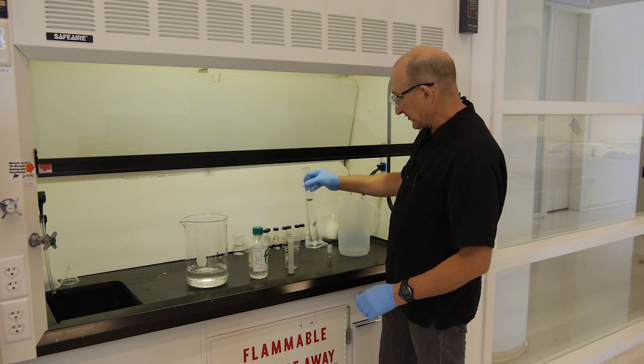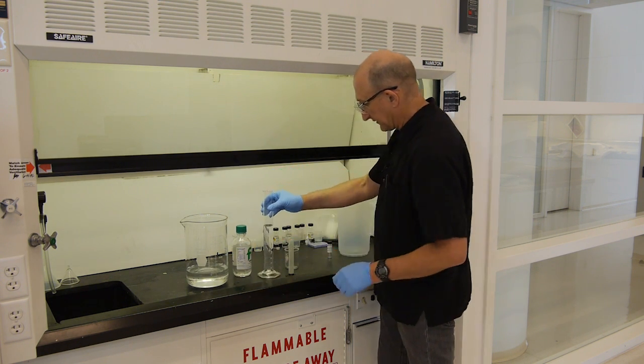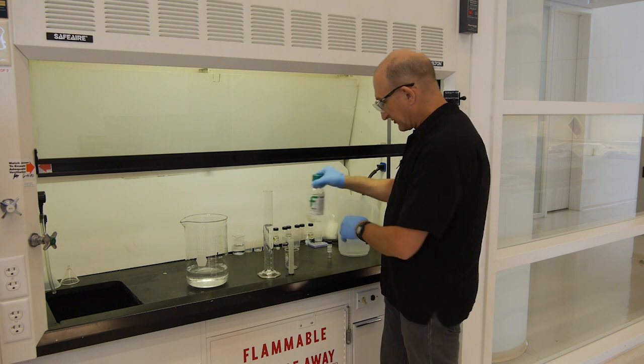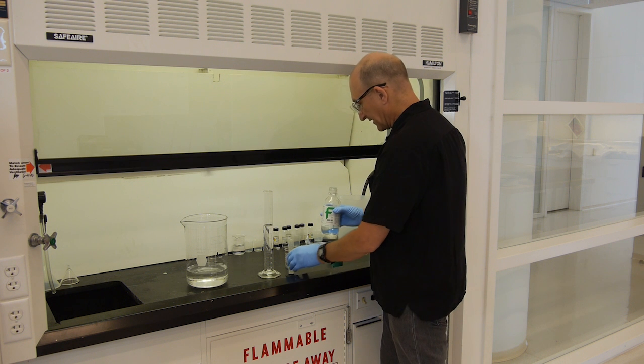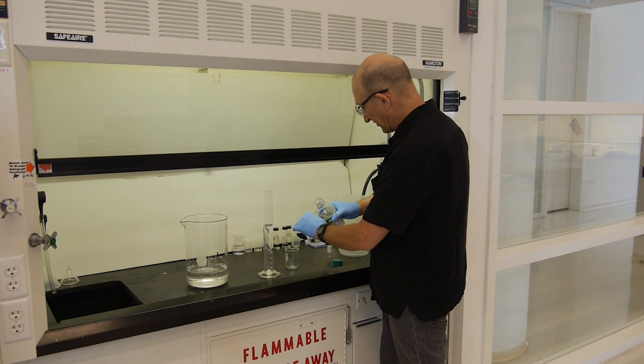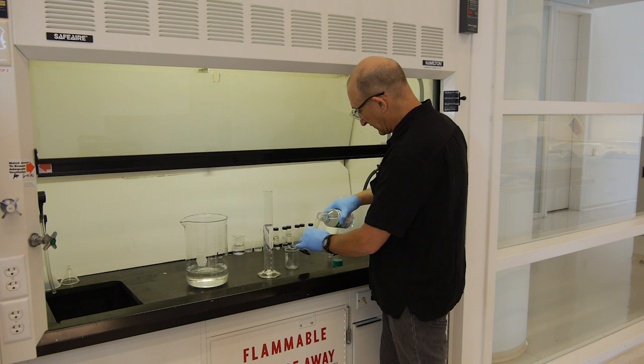So here we have 180 milliliters of deionized distilled water in our graduate. And we'll take 20 milliliters of the ammonium hydroxide. This is the concentrated ammonium hydroxide, so it's 27% ammonia gas dissolved in water.